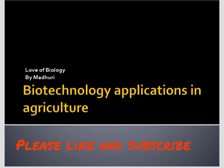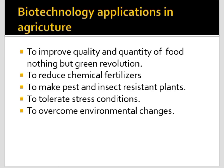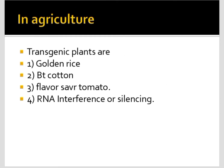Biotechnology is producing products for human welfare by using living organisms or their molecules. In agriculture, biotechnology is used to improve the quality and quantity of food — a green revolution — because the population is increasing day by day. It also helps reduce chemical fertilizers, make pest and insect resistant plants, and tolerate stress conditions to overcome environmental changes.